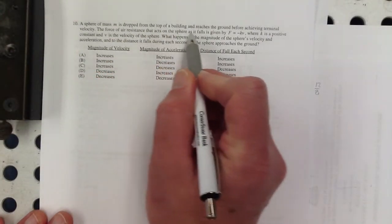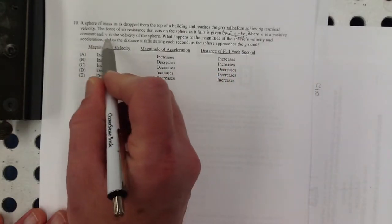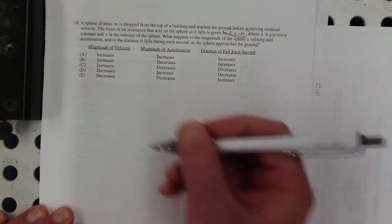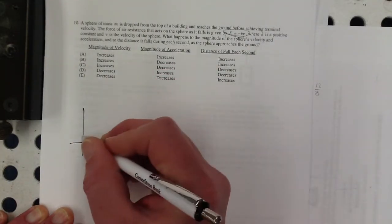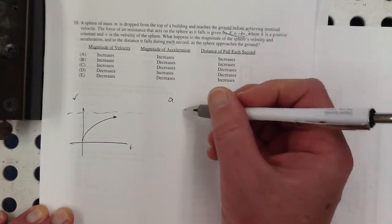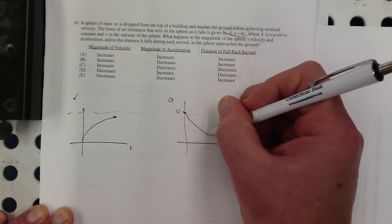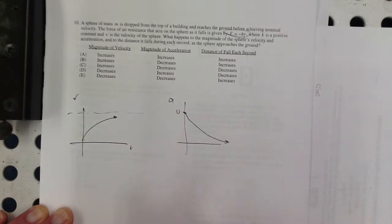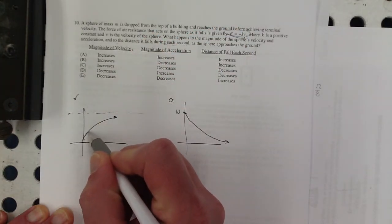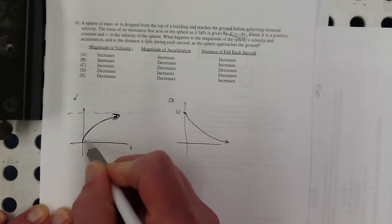A sphere of mass M is dropped from the top of a building and reaches the ground before achieving terminal velocity. The force of air resistance that acts on the sphere is given by this. That's a classic model, where K is a positive constant. What happens to the magnitude of the sphere's velocity and acceleration and to the distance it falls during each second as the sphere approaches the ground? So just to remind you what will happen with the velocity or the speed that will approach terminal velocity, what will happen with the acceleration? The acceleration will start at 9.8 meters per second squared, the magnitude of it, and then it will decay down to zero because this is approaching a constant speed. And let's see if we can do it from there. So the magnitude of the velocity is going to decrease, right? Ah, sorry. The magnitude of the velocity is going to increase toward this. I was thinking of the slope of this. So the magnitude continues to increase.